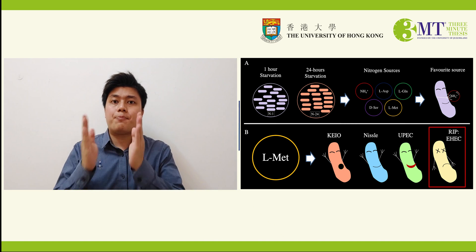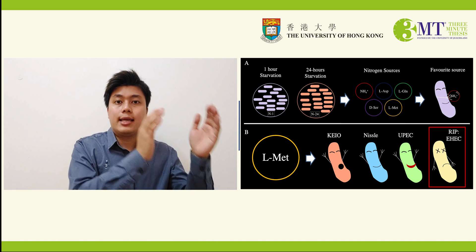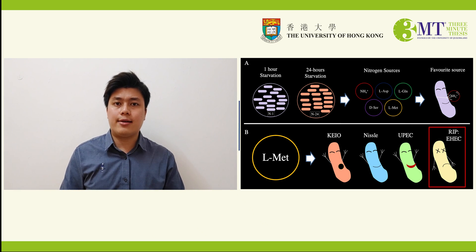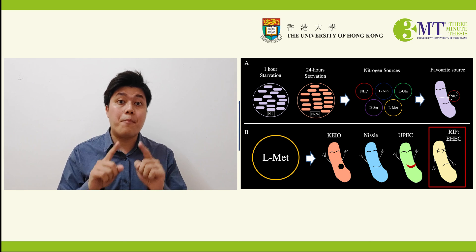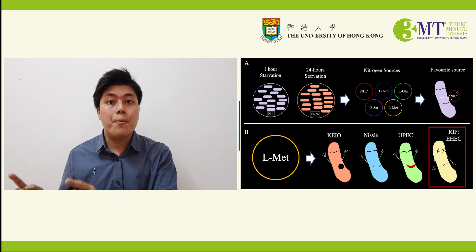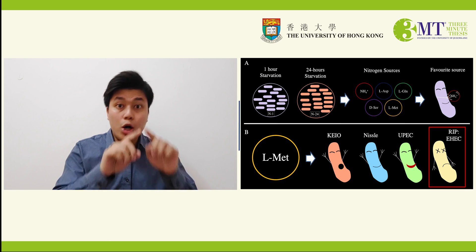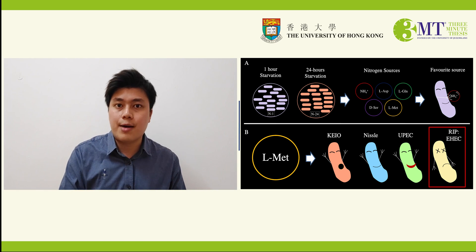However, some bacteria such as the pathogen Enterohemorrhagic E. coli, which is known as E-head bacteria that causes severe diarrhea in humans, are known to survive in many environments such as in the marine system, river waters, and even in crops, all of which are known to be nitrogen-limited environments.